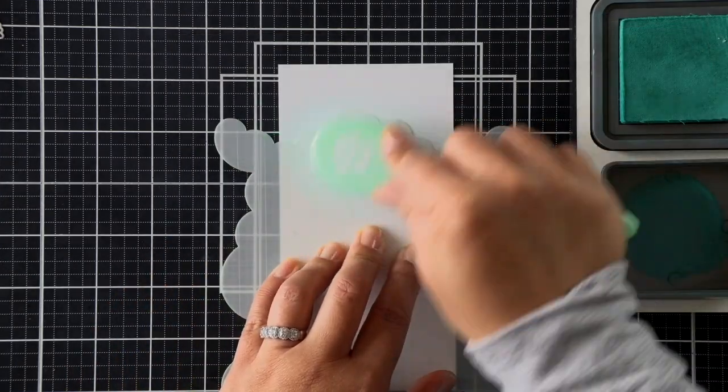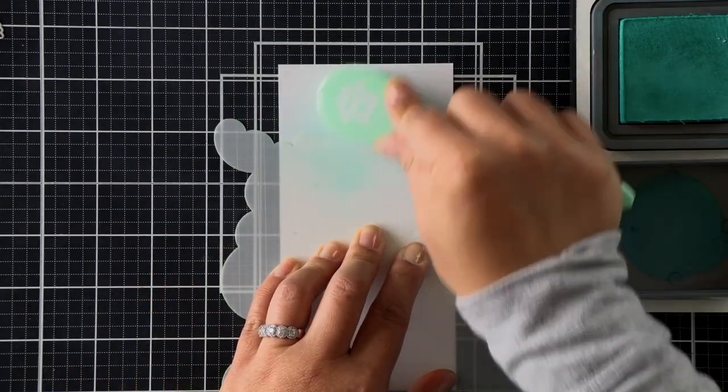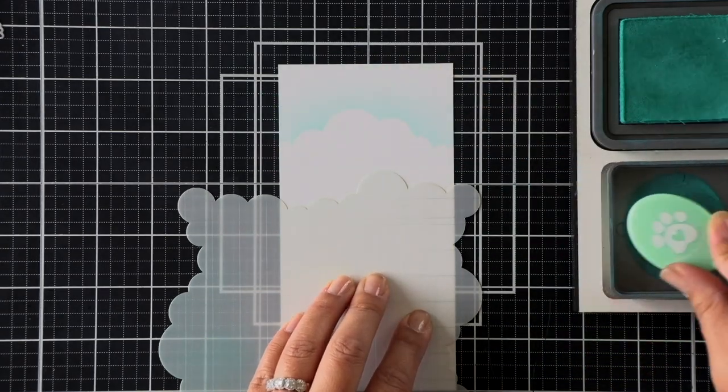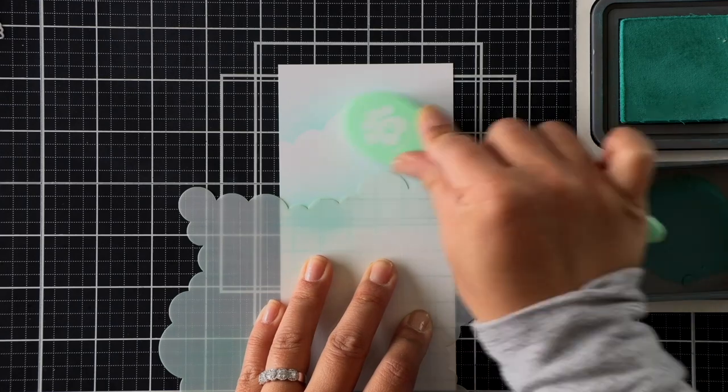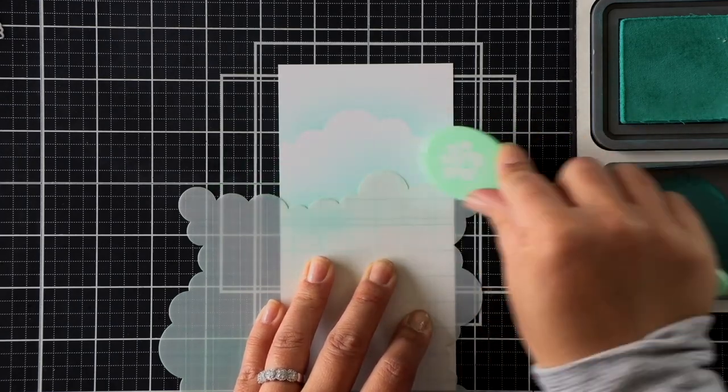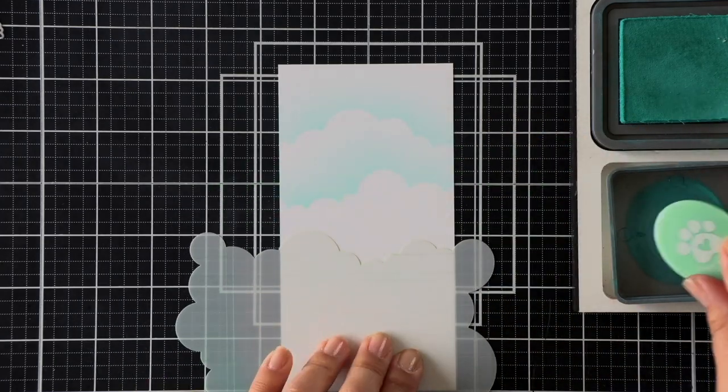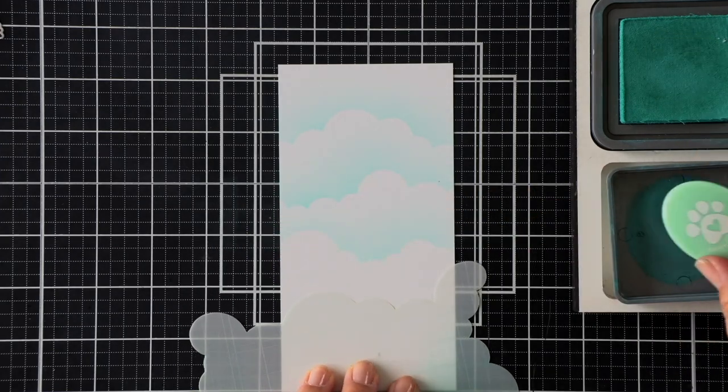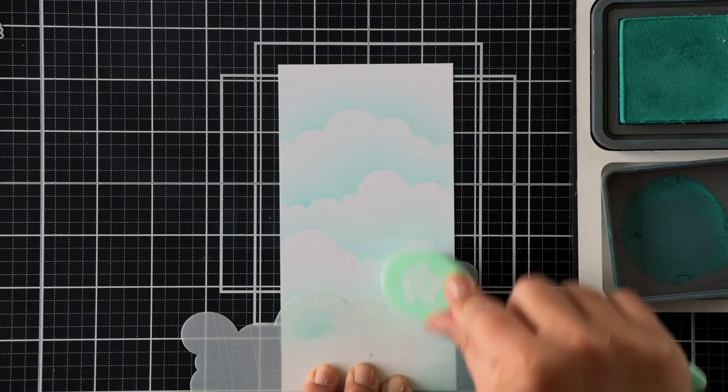And I'll first ink blend my background here with peacock feathers, and I'm using the cloud stencil to go ahead and add some color all the way down the panel. I'm using a very light hand, going in circular motions clockwise and counterclockwise to get a really good, soft, even blend.